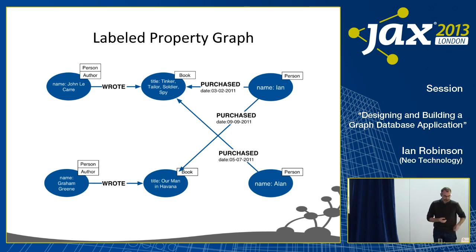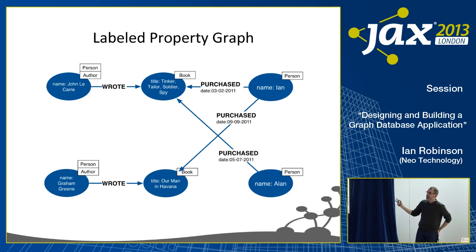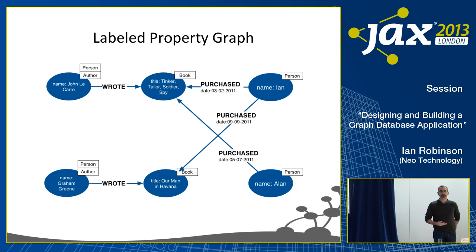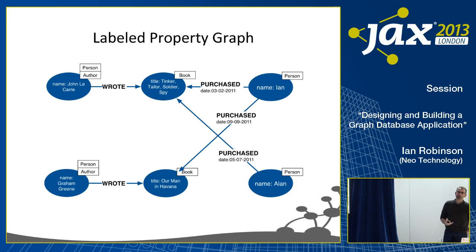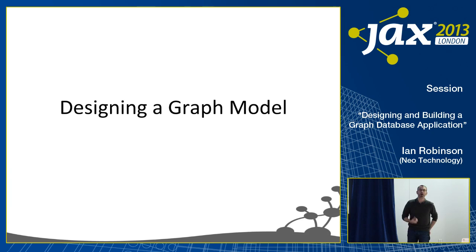That's the property graph model that Neo4j employs — a very simple example, but exactly the kind of thing you're going to have to start thinking about if you want to use Neo4j in your own application. What kind of graph model do you want to employ to represent the things you're interested in, in order to ask those interesting questions of that data? How is it best to structure it to write efficient and expressive queries? That's the stuff I'm going to discuss now — how we actually go about designing one of these graph models.